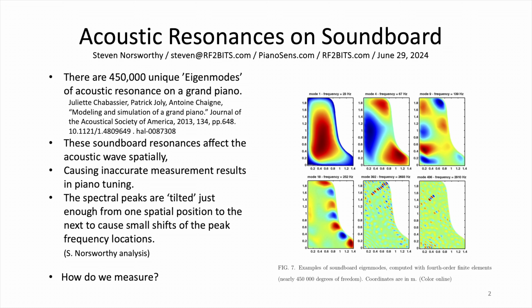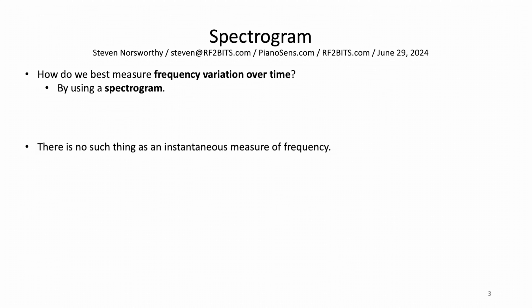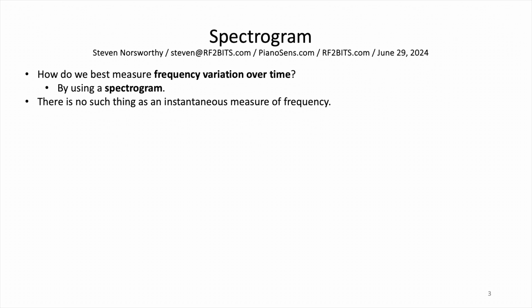So how do we measure that, and how is it affected in the result of piano tuning? How do we best measure frequency variation over time? By using a spectrogram — that's the very definition of what a spectrogram is. It measures frequency variation over time, because there is no such thing as an instantaneous measure of frequency. Frequency measurements occur over a window of time.